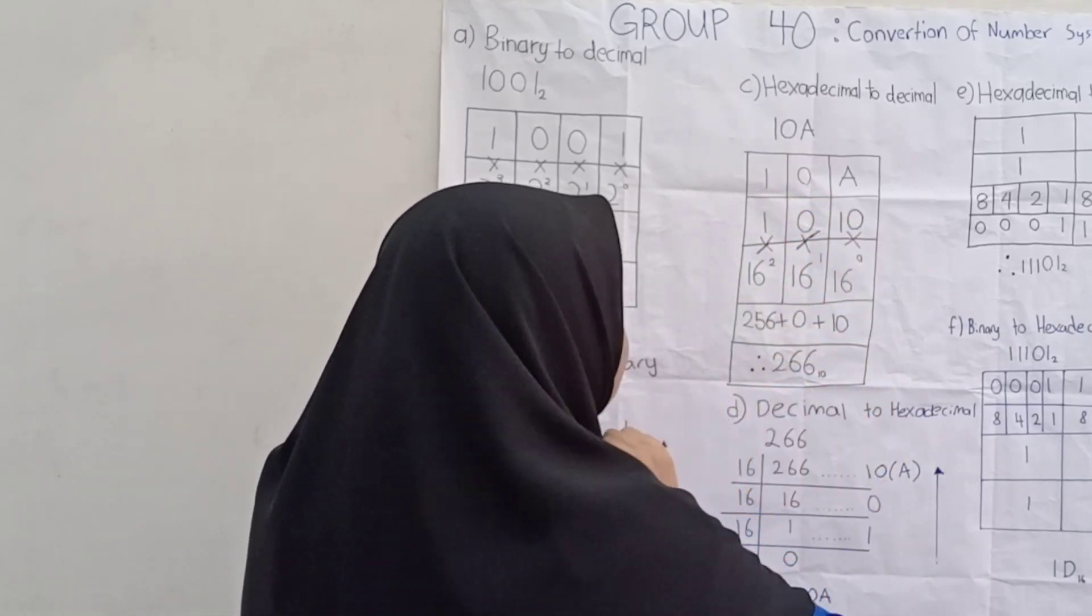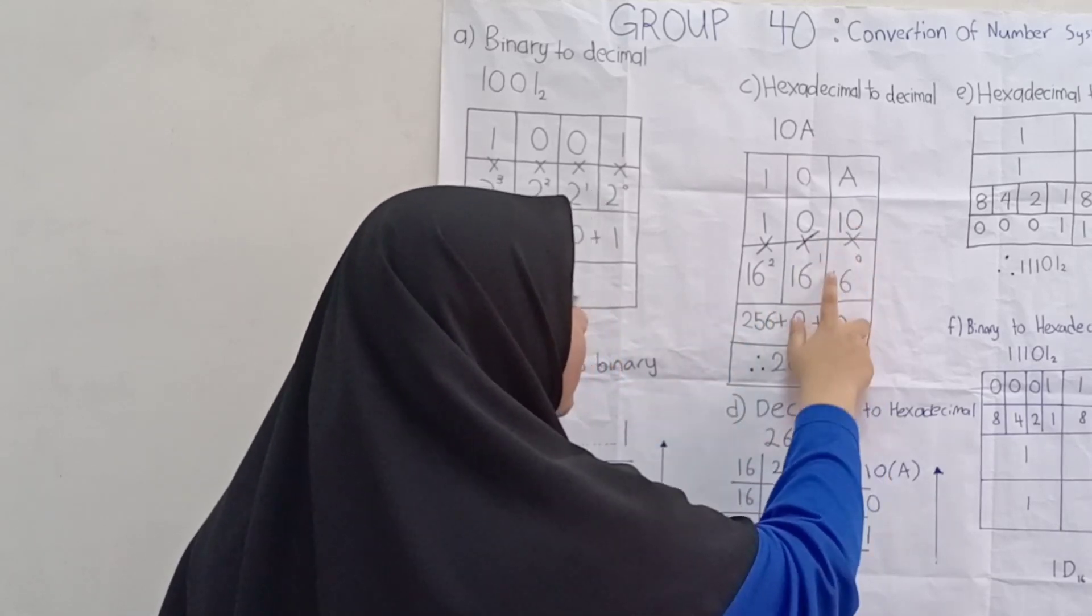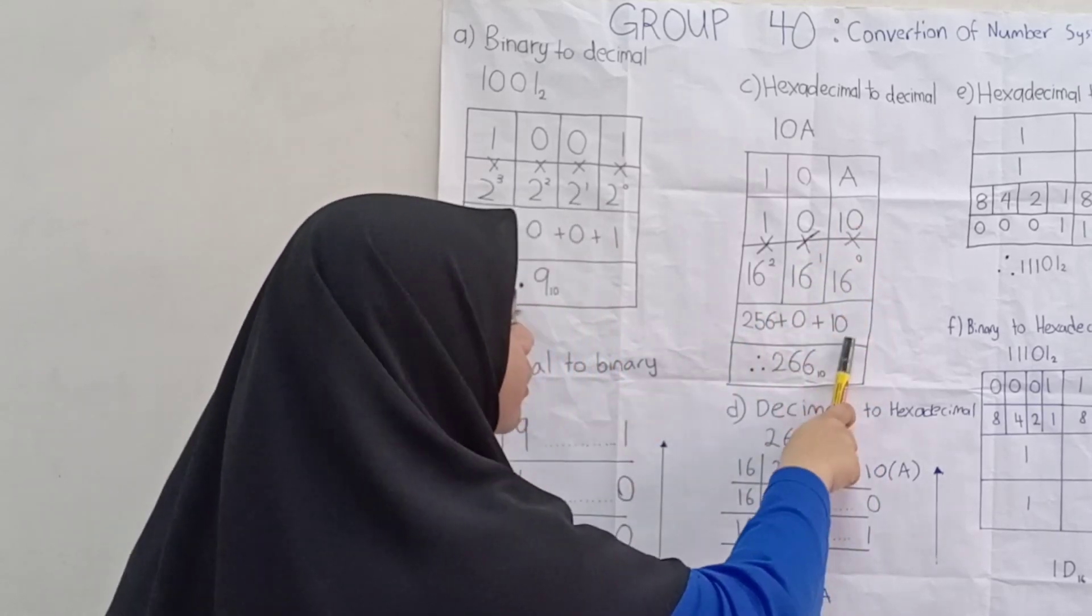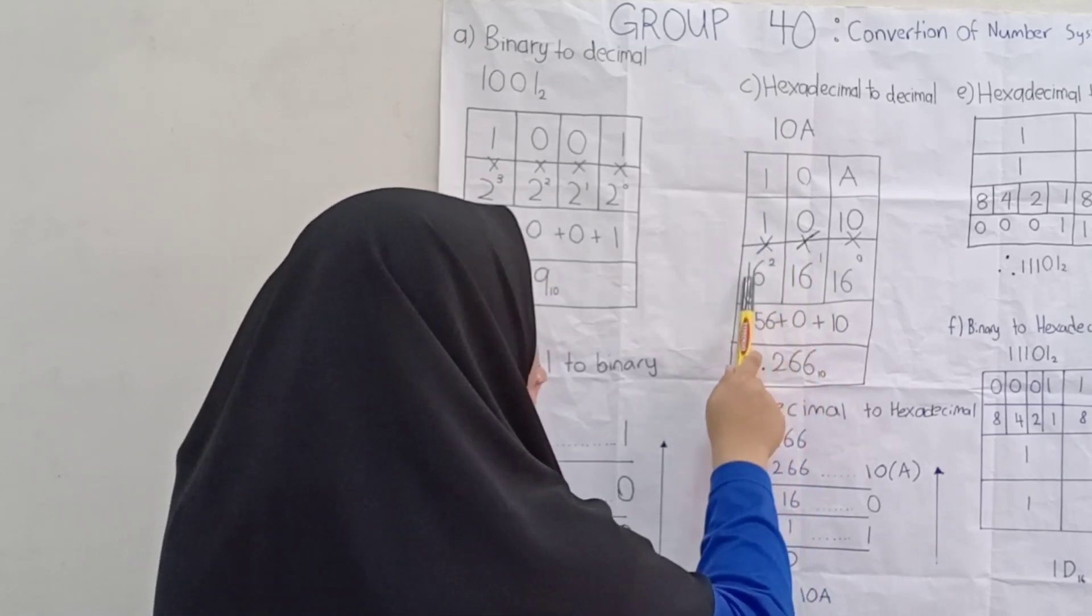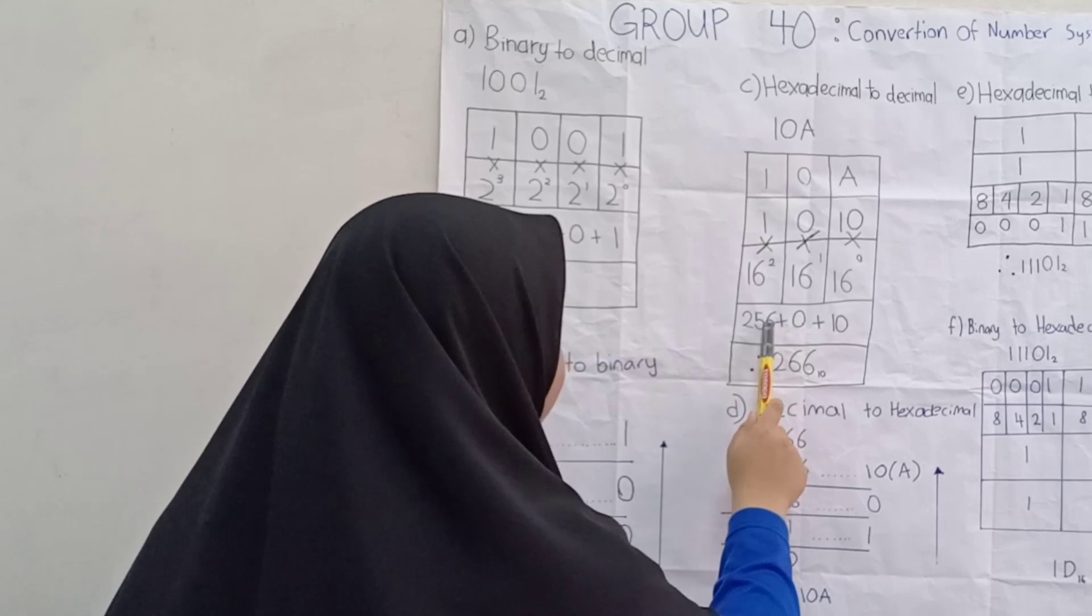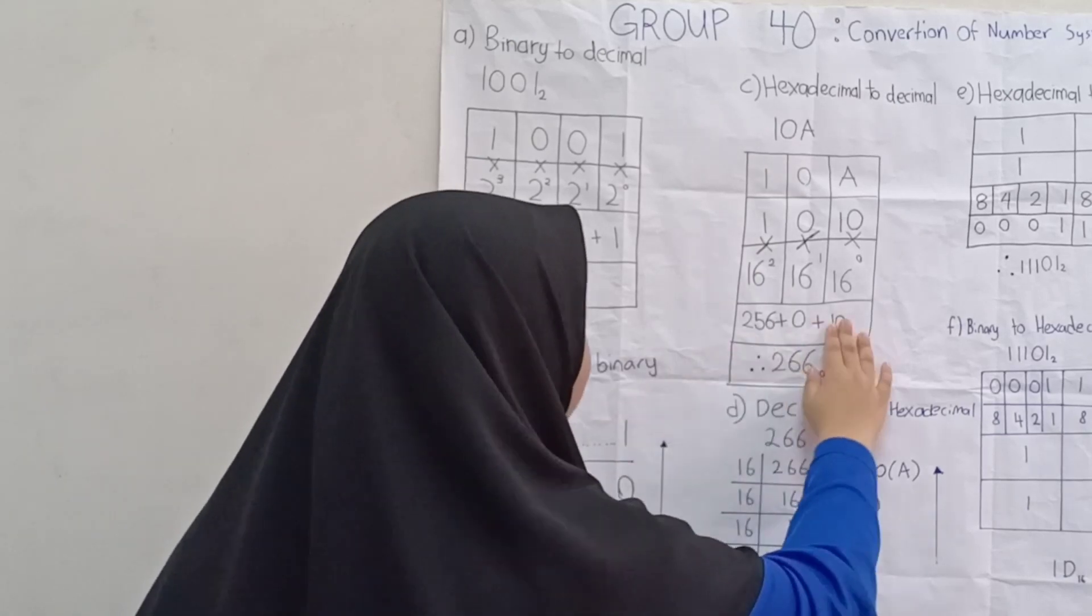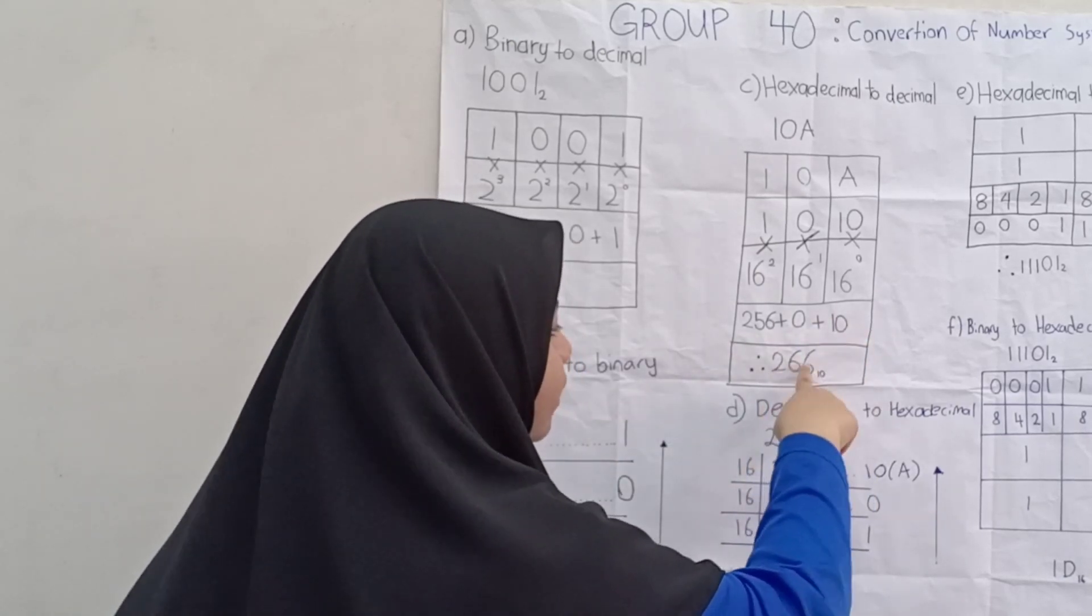Tekan calculator masing-masing. 10 darab dengan 16 kuasa 0 sama dengan 10. 0 darab dengan 16 kuasa 1 sama dengan 0. 1 darab dengan 16 kuasa 2 sama dengan 256. Total up semua, kita akan dapat 266 base 10.